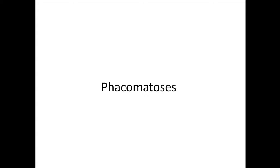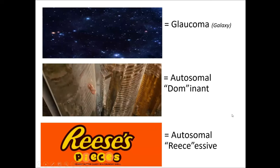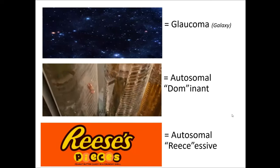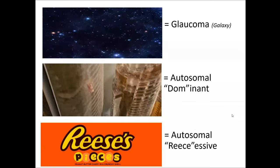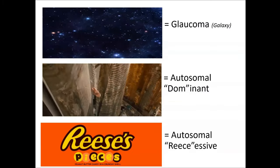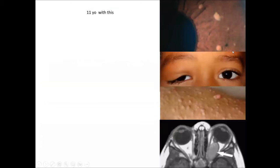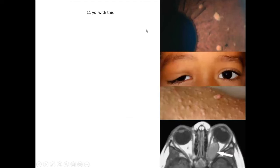All right, let's get started. Today we're going to be talking about phacomatoses. I think they're kind of fun but there's a lot to remember. We'll go over some teaching slides and some ways to remember them. As background: if you see Vin Diesel, it's autosomal dominant; if you see Reese's Pieces, it's autosomal recessive; and if you see the galaxy, it's for glaucoma.